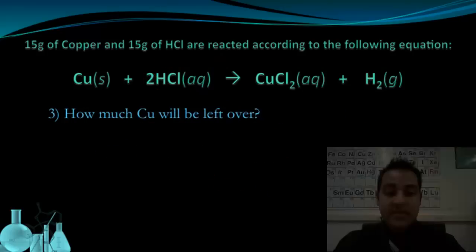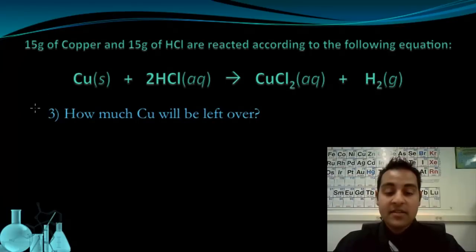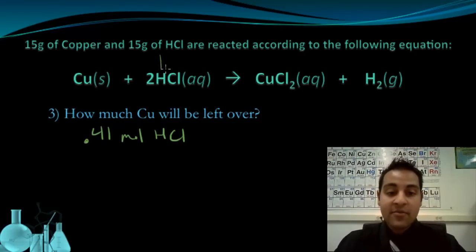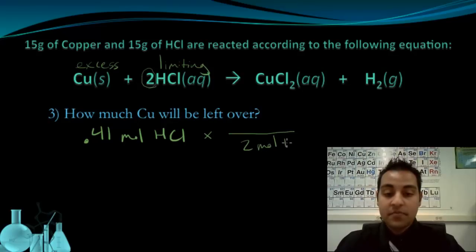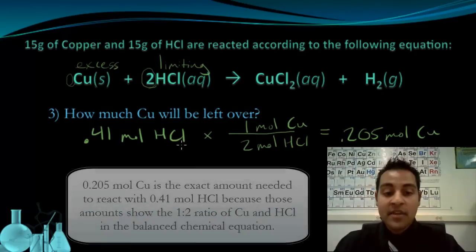Another thing I can be asked about is how much of the excess reagent, the copper in this case, is left over. Now just like the last time, everything starts with the 0.41 moles of HCl. That's my limiting reagent. What I need to do is I need to figure out how much copper is going to be used up reacting with this amount of my limiting reagent. So again, here's my mole ratio. I have 2 moles of HCl from the balanced chemical equation for every 1 mole of copper.